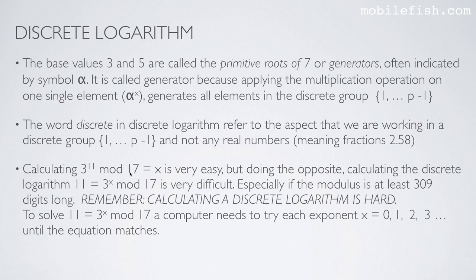Calculating 3 to the power of 11 mod 17 is very easy, but doing the opposite, calculating the discrete logarithm 11 is 3 to the power of x mod 17 is very difficult. Especially if the modulus, in this case 17, is at least 300 digits long. So if this value is 300 digits long, the discrete logarithm is very hard to calculate. Remember, calculating a discrete logarithm is hard. To solve this equation 11 is 3 to the power of x mod 17, a computer needs to try each exponent 0, 1, 2, 3, etc., until the equation matches.